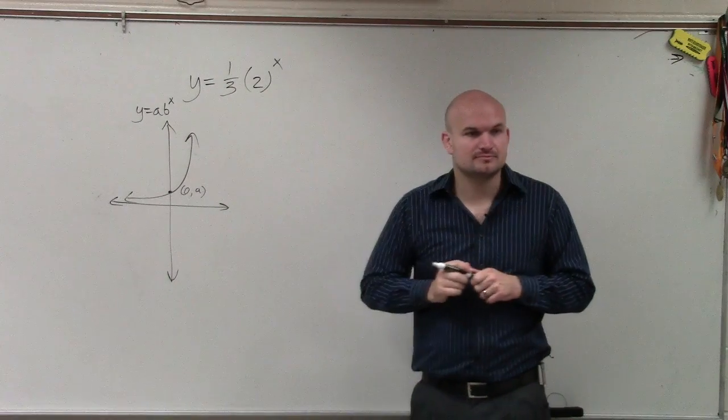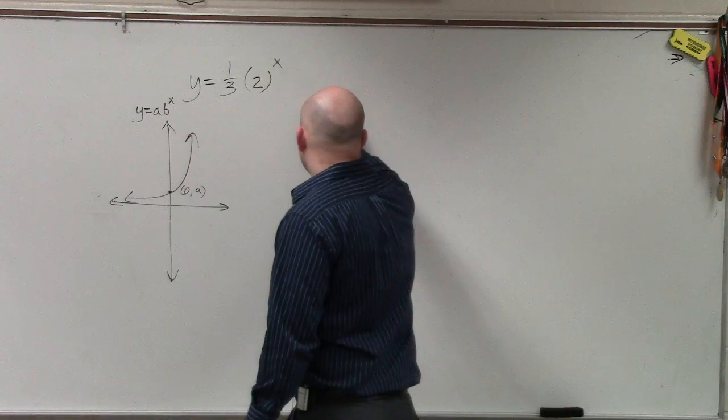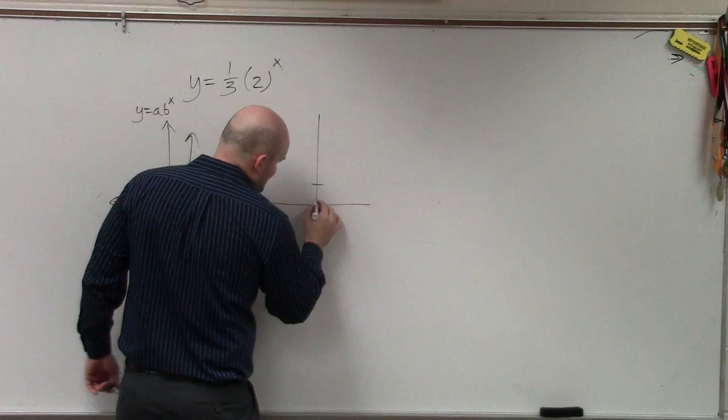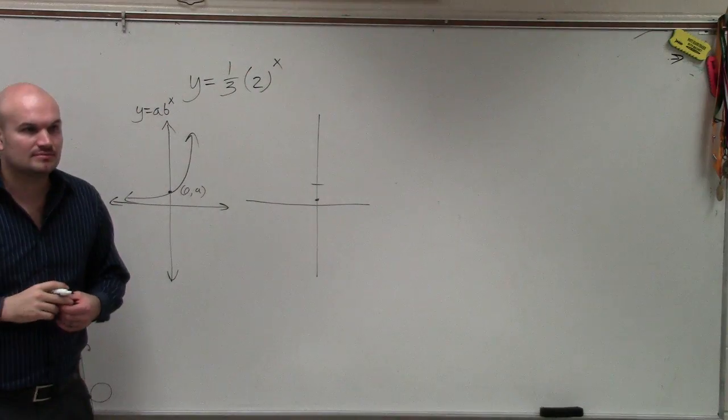In my example. Oh, one-third. One-third. So therefore, we can say that the graph is going to cross at one-third. Does that make sense? Okay?